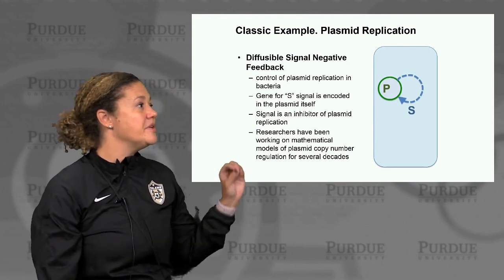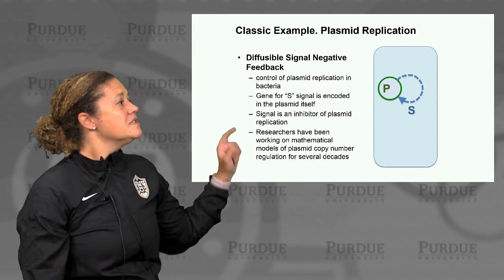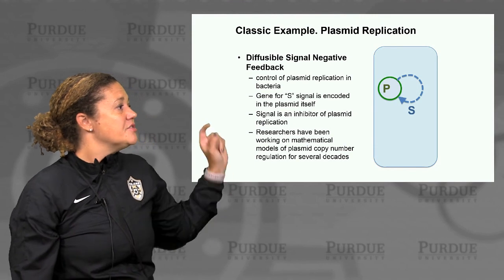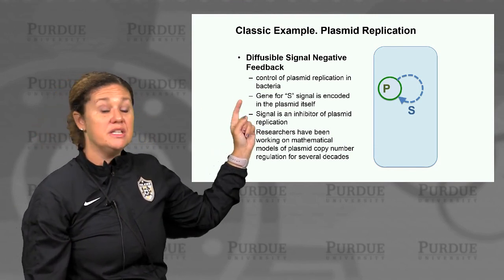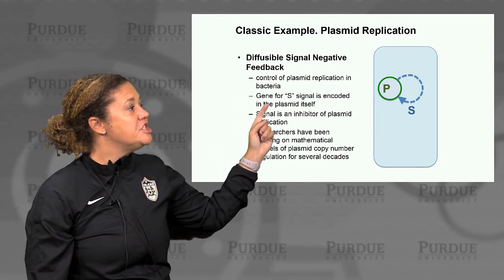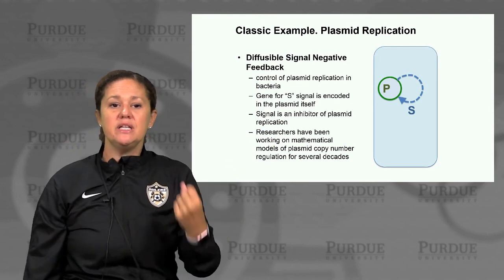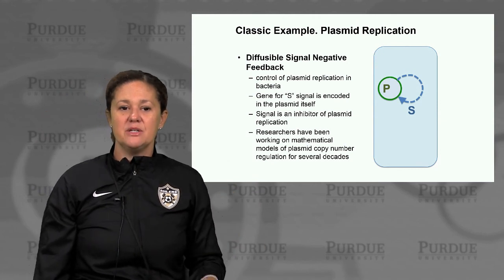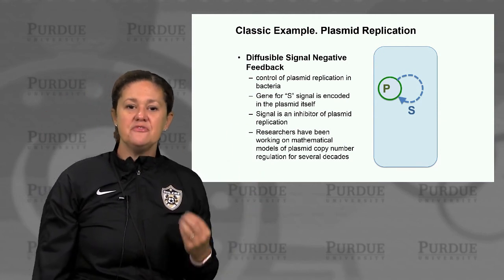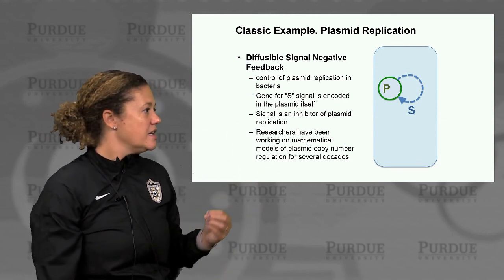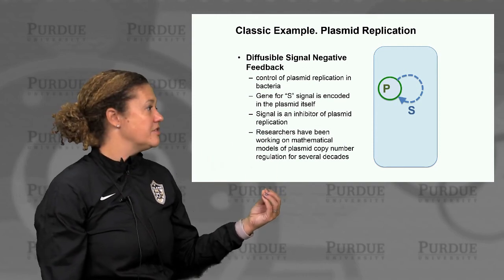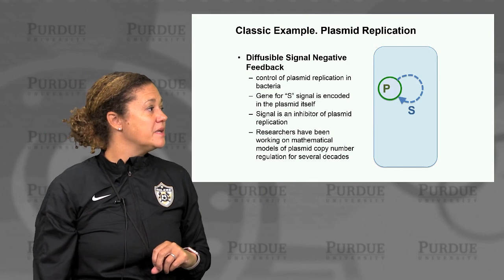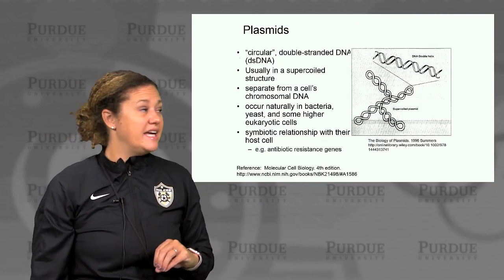In plasmid replication, there is diffusible signal negative feedback controlling plasmid replication in bacteria. A gene for some signal is encoded in the plasmid itself, and the signal acts as an inhibitor of plasmid replication — providing negative feedback based on the number of plasmids present. Researchers have been working on mathematical models of plasmid copy number regulation for several decades.